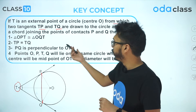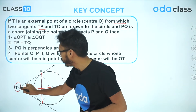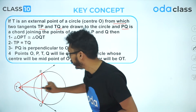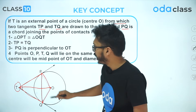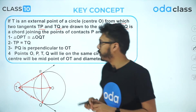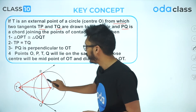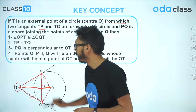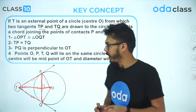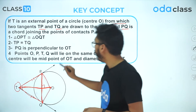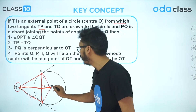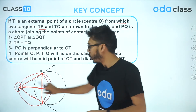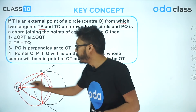The results are: triangle OPT and triangle OQT are congruent. Since these two triangles are congruent, TP will be equal to TQ. Also, PQ is perpendicular to OT — that is, this chord of contact PQ is perpendicular to the line joining O and T, making this angle 90 degrees. One more result: points O, P, T, Q will lie on the same circle, meaning they are concyclic. This circle will have OT as its diameter, and the center of the circle will be the midpoint of OT.